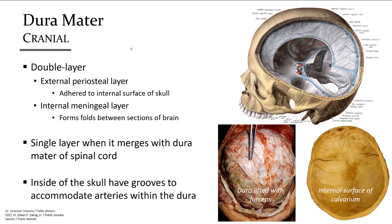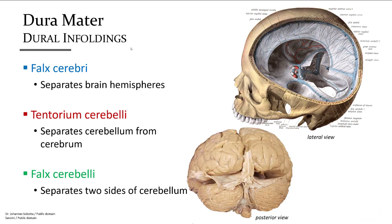Inside the skull, the dura mater has two layers that are essentially laminated together, except in areas where a space is created for venous drainage. The outer layer is fused with the bone. The inner, internal meningeal layer is continuous with the dura around the spinal cord. The infoldings of the double layer of dura within the cranium form three major divisions.